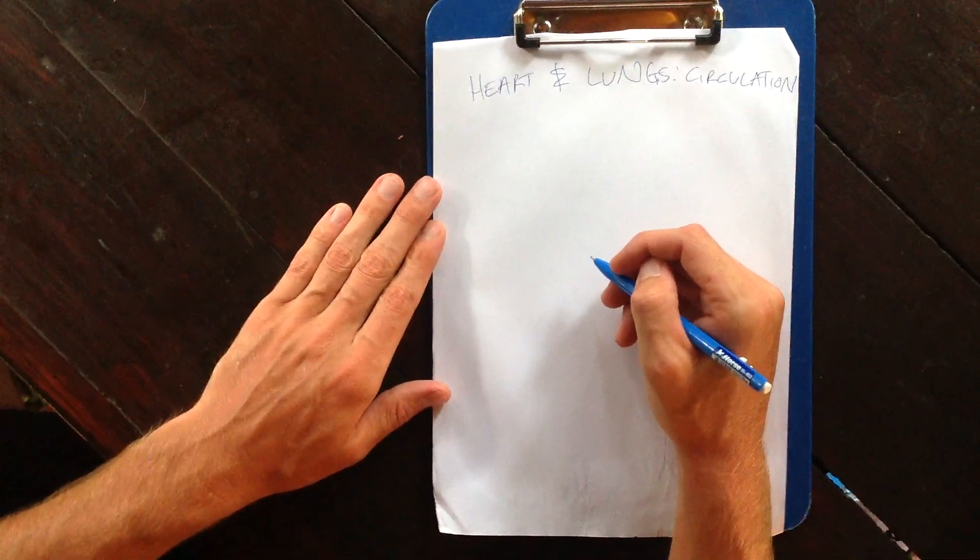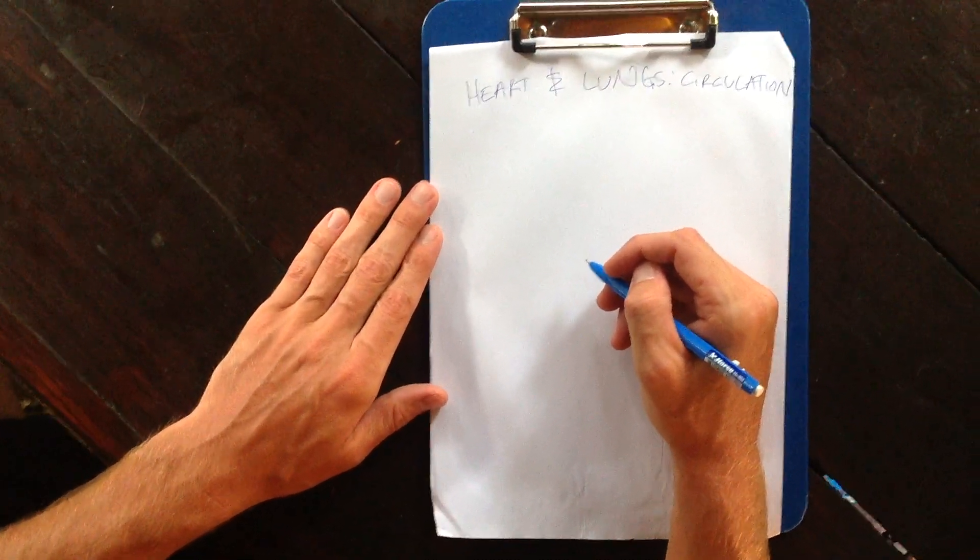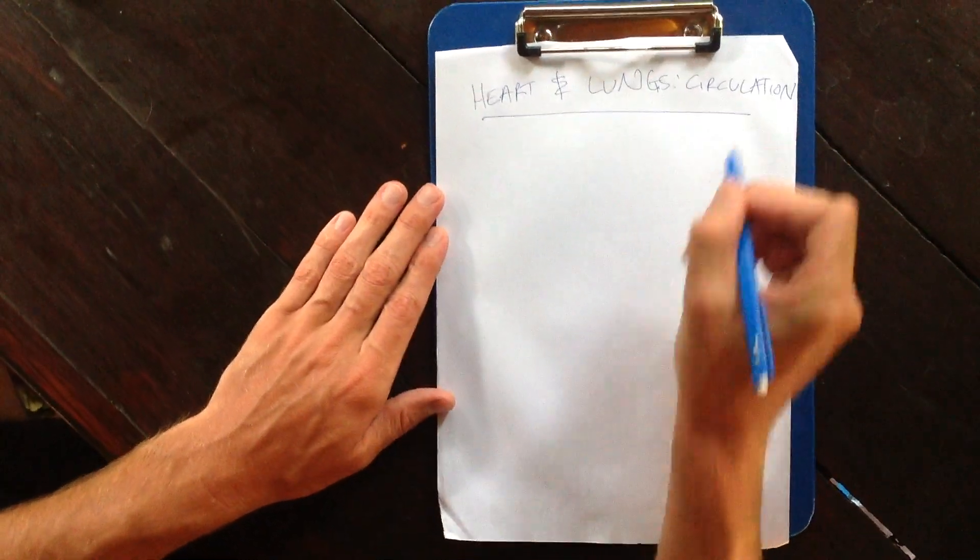Okay, quick challenge here guys, because the number one question we get asked in the Revision Mastery Academy is all about the heart and lungs and circulation.